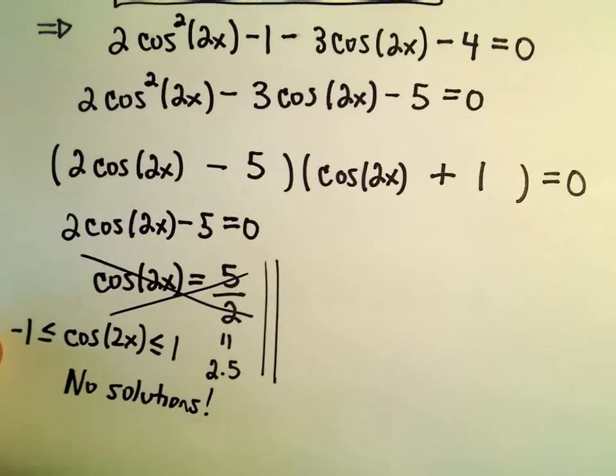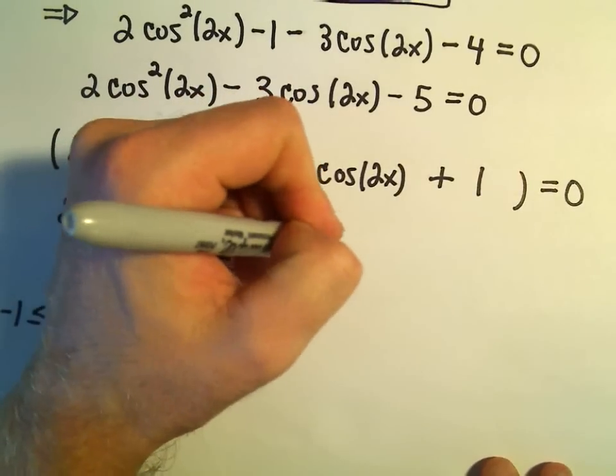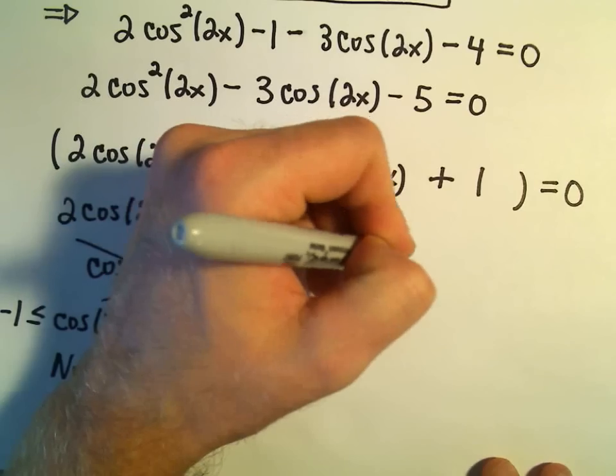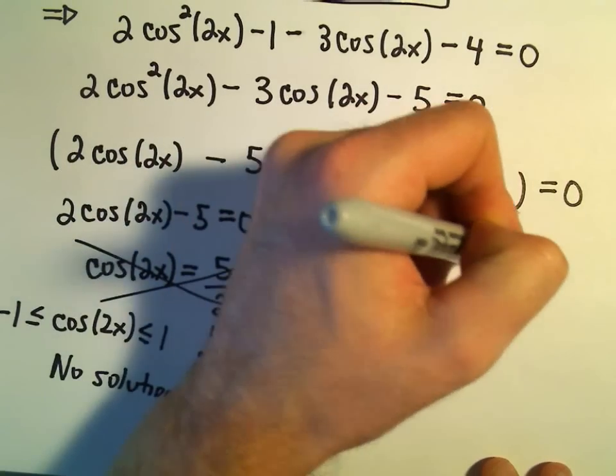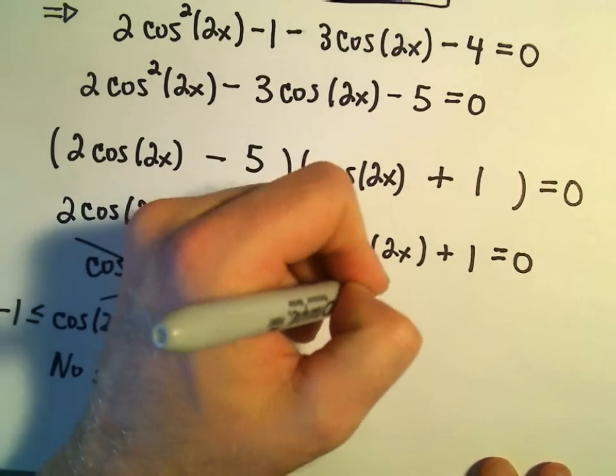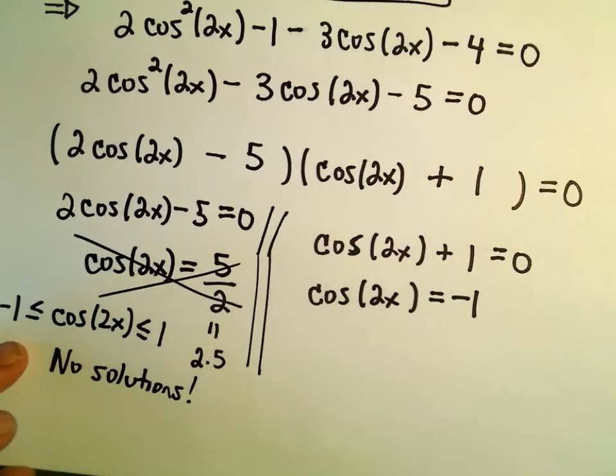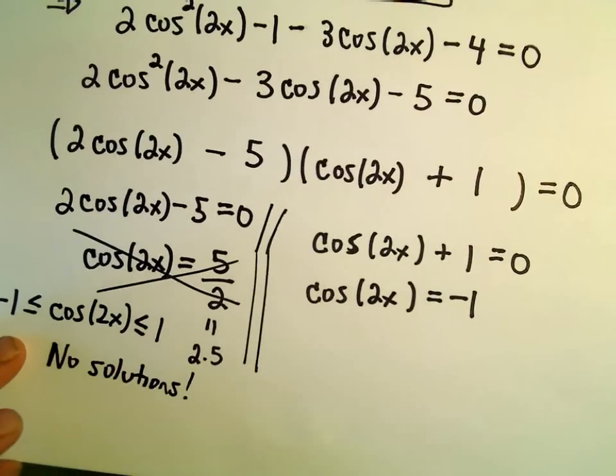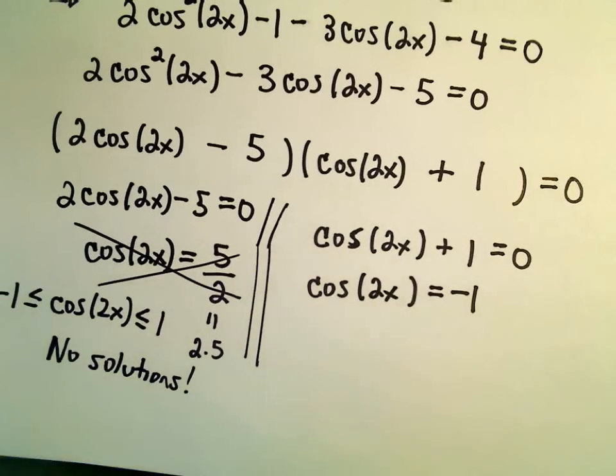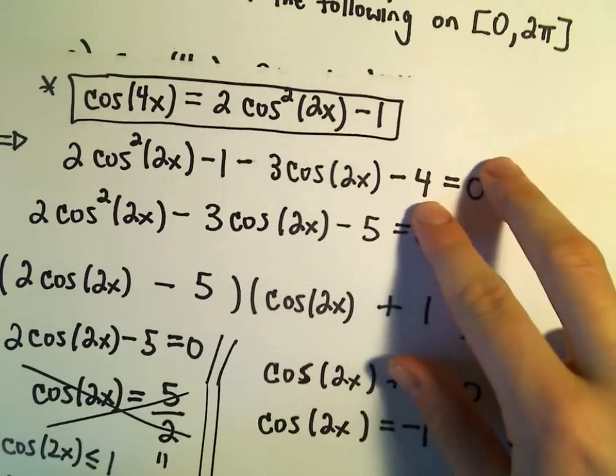Alright, well, at least that makes work a little easy for us. Now we'll also have to take cosine of 2x plus 1 equals 0. So let's see. That'll be cosine of 2x equals negative 1. Okay, so now I'm going to start thinking about my original interval. I think we said we'll find solutions in the interval 0 to 2 pi.